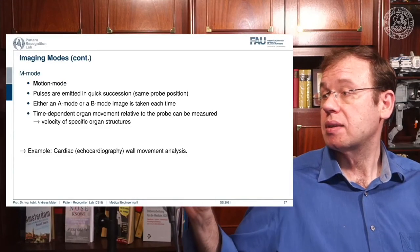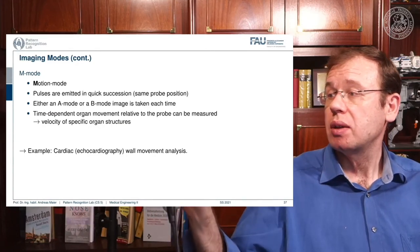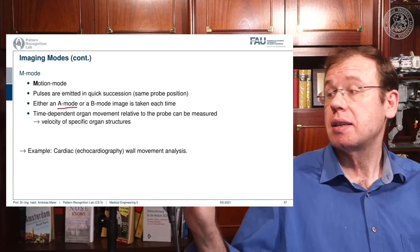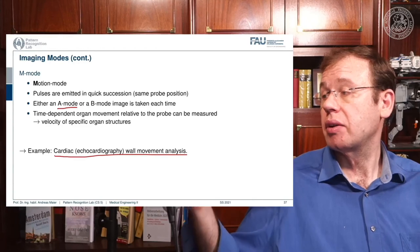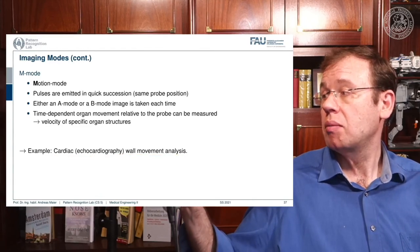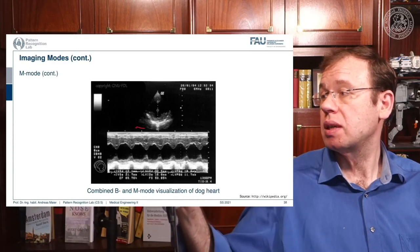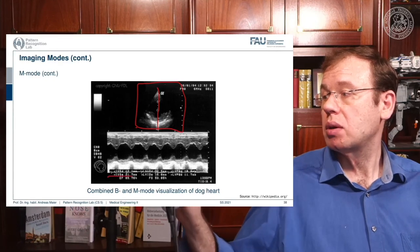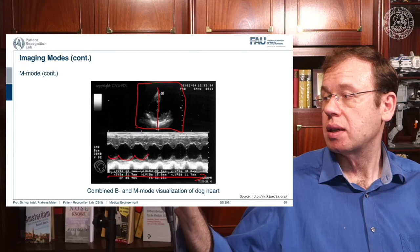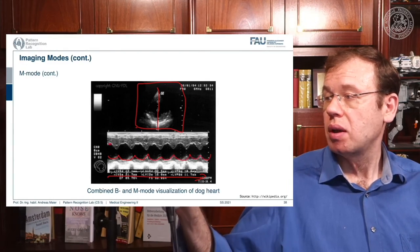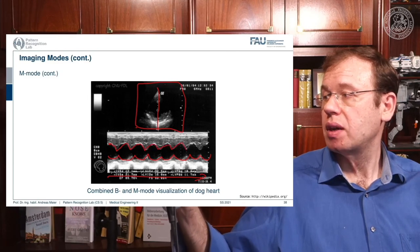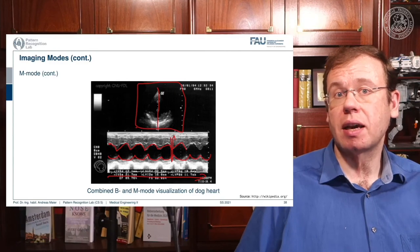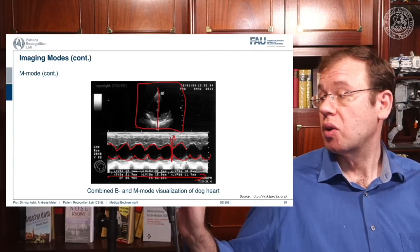The M mode, or motion mode, acquires many A mode images over time to visualize motion in a single image. The typical application is cardiac analysis — investigating wall movement. You take one line in the B mode image and plot it over time, seeing how the heart beats. You can analyze whether there is complete valve closure, whether corresponding points are in synchrony, and diagnose abnormalities in heart motion.